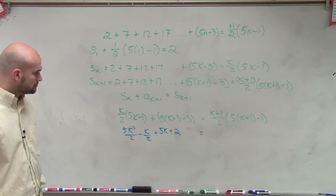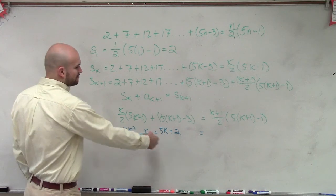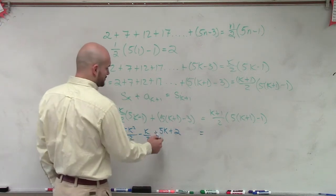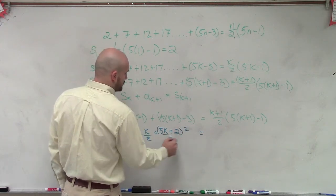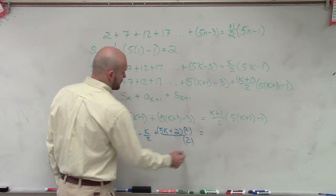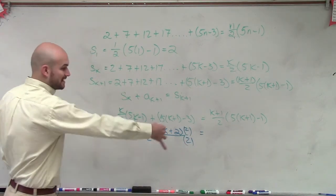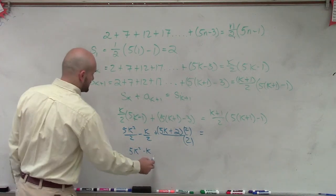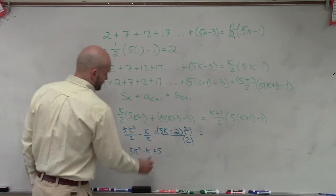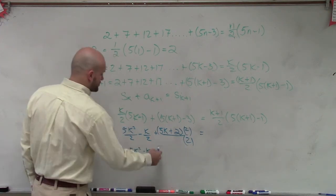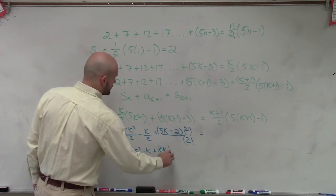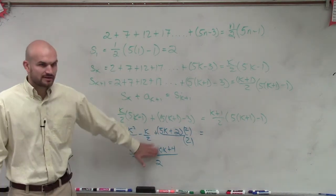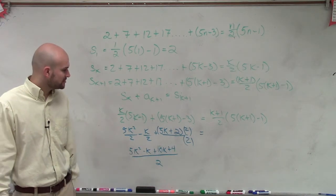Now we can go ahead and combine these. I could multiply by 2 over 2. So if I multiply this whole expression by 2 over 2, therefore, now I can put everything under 2. So I could say 5k squared minus k plus, let's distribute that, plus 10k plus 4 all over 2, right? So now I can rewrite it like that. And then negative k plus 10k is going to be 9k.